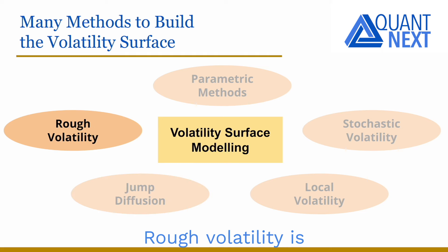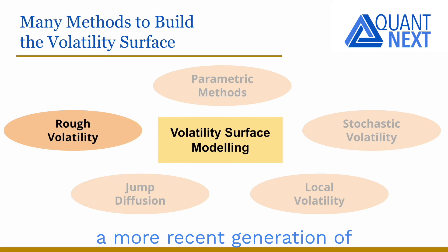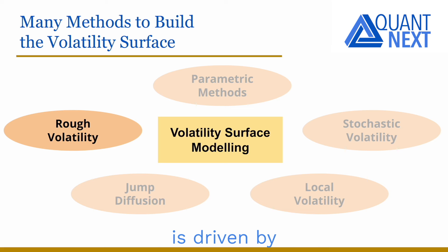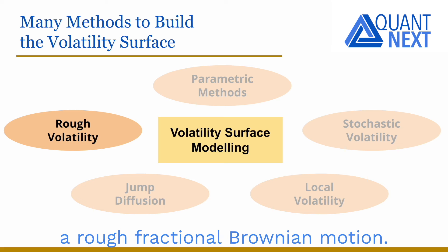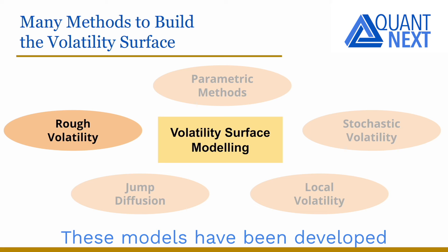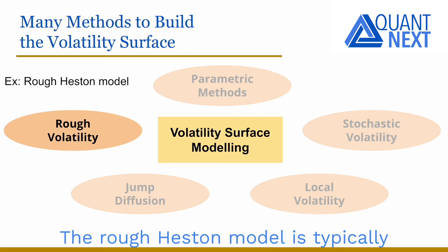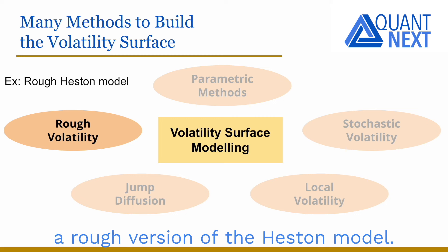Rough volatility is a more recent generation of stochastic volatility models where the instantaneous volatility is driven by a rough fractional Brownian motion. These models have been developed based on the behavior of volatility on high-frequency data. The rough Heston model is typically a rough version of the Heston model.